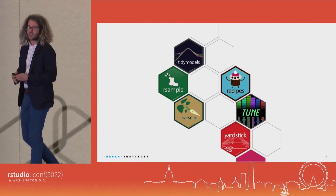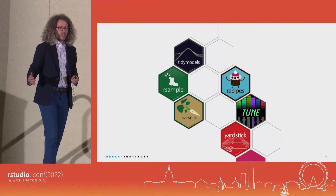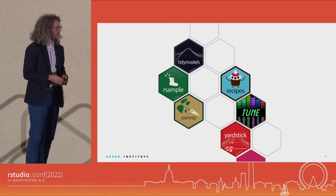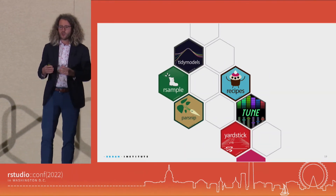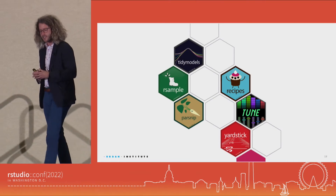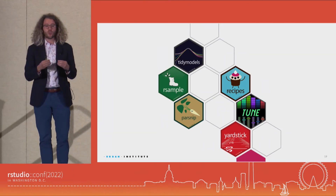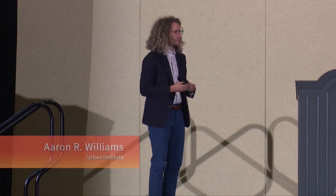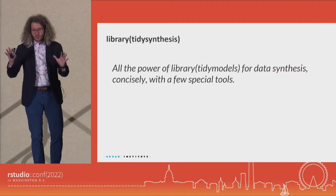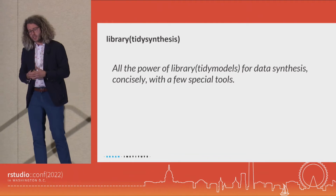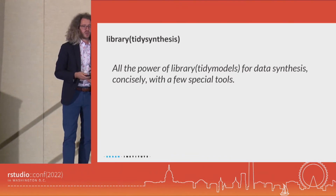So what tidysynthesis allows us to do is specify a whole sequence of predictive models for generating synthetic data. It also allows us to do a few things very specific to data synthesis: it allows us to add additional noise to predicted values for extra confidentiality protection, to specify constraints in the data — things like individual income can't exceed family income, or interest income can't exceed your personal income — and to predict from our models in different ways. Simply put, the goal of tidysynthesis is all the power of tidymodels for data synthesis, concisely with a few special tools.